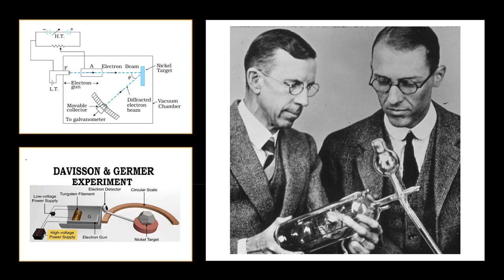The detector can be moved on a circular scale and is connected to a sensitive galvanometer which records the current. The deflection of the galvanometer is proportional to the intensity of the electron beam entering the collector. The apparatus is enclosed in an evacuated chamber. By moving the detector on the circular scale at different positions, the intensity of the scattered electron beam is measured for different values of angle of scattering theta, which is the angle between the incident and the scattered electron beams. The variation of the intensity of the scattered electrons with the angle of scattering is obtained for different accelerating voltages.